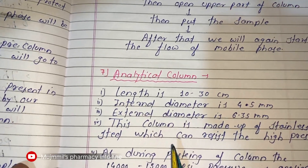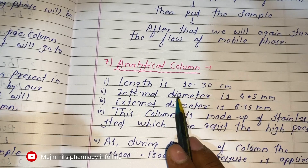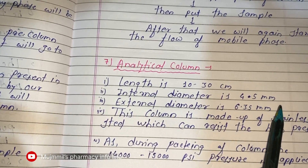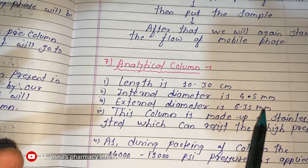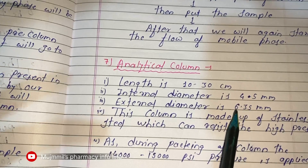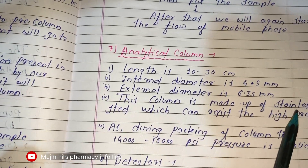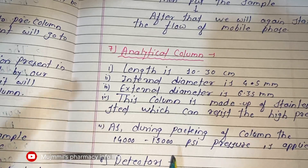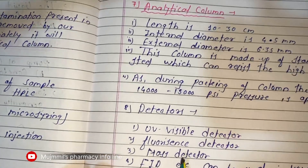The analytical column has a length of 10 to 30 centimeters, an internal diameter of 4.5 mm, and an external diameter of 6.35 mm — these may be asked in MCQ or 2-mark questions. This column is made of stainless steel because it must resist the high pressure; during packing of the column, 14,000 to 50,000 psi pressure is applied.